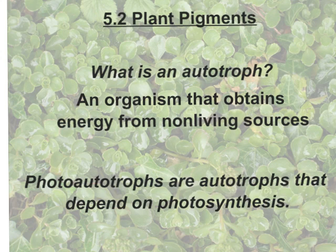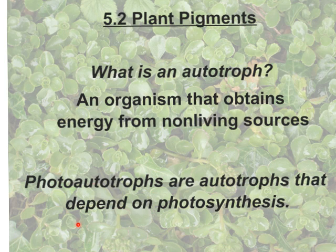Hello and welcome to this section about plant pigments. I'd just like to start by asking if you remember from one of our previous units: what is an autotroph? Autotrophs are organisms that obtain their energy from non-living sources. There are photoautotrophs that depend on photosynthesis — they rely on energy from the sun. There are also chemoautotrophs which gain their energy from chemicals, and these are usually prokaryotes. Photoautotrophs, as you probably know, are usually plants.